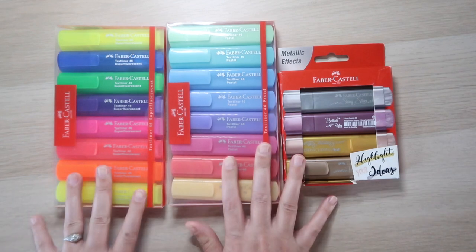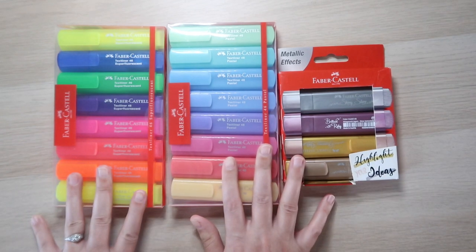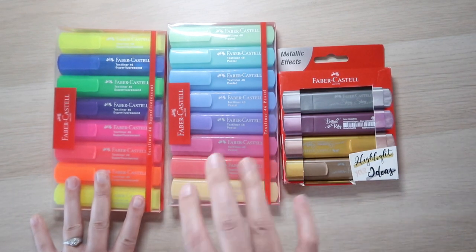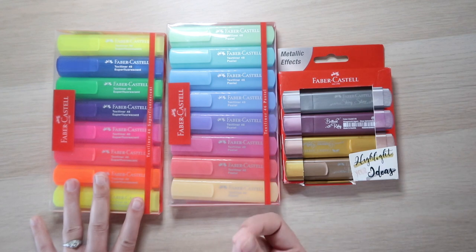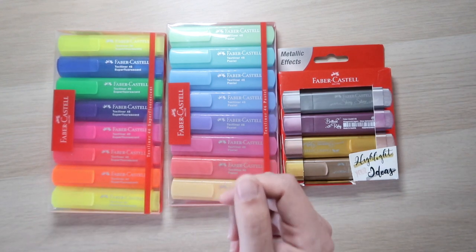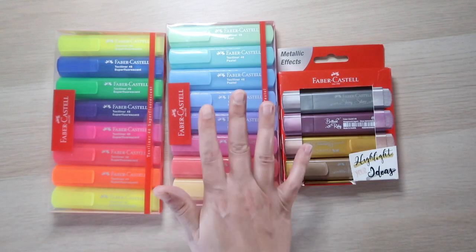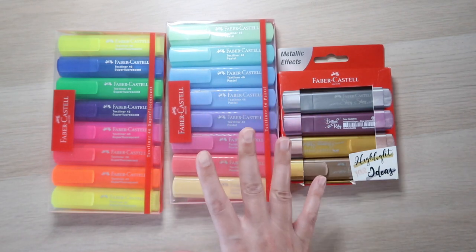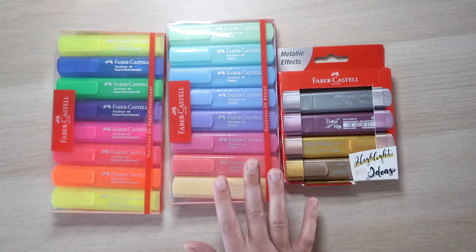The information I got about these highlighters is that they have the ability for three line widths, depending on how you hold the chisel. They're chisel-tipped. But depending on how you hold the chisel tip, you can get a 1mm, a 2mm, or a 5mm line. They are water-based, odorless, smudge-proof.